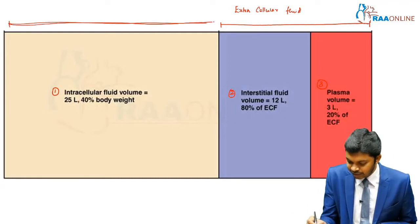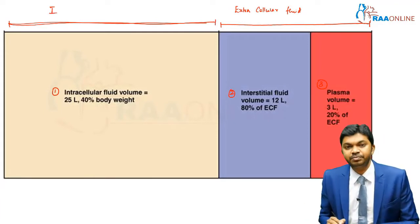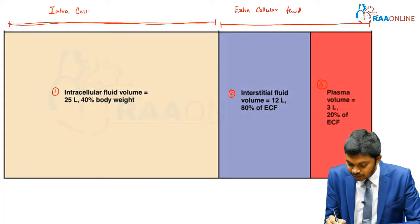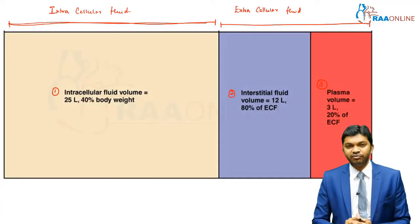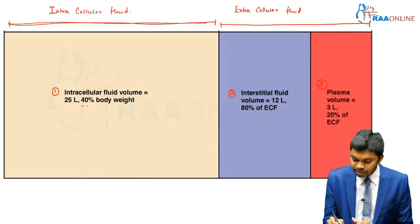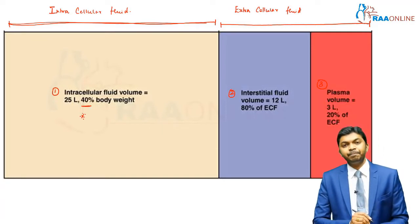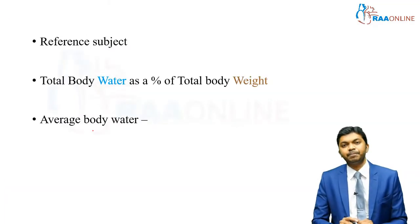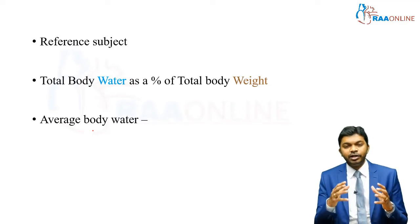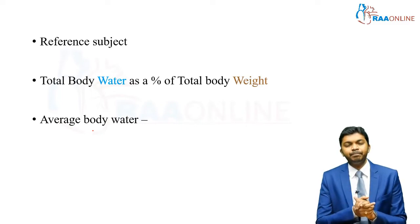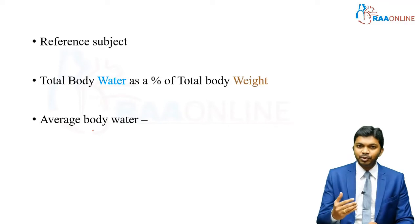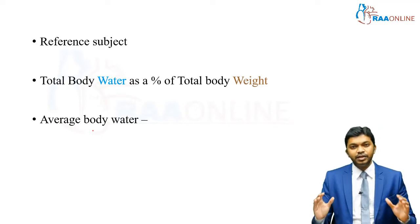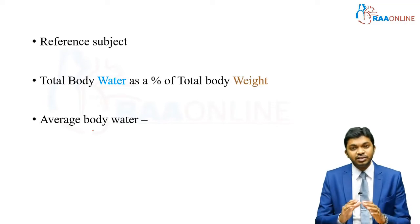So one big compartment is extracellular fluid, and the other is intracellular fluid. Out of these two broad categories of body fluid distribution, much of the water is present in the intracellular compartment, and proportionately less water is present in the extracellular compartment. In order to evaluate the range of water distribution in the body, we take a reference subject and study how water is distributed in that one particular subject. The value obtained from such a subject is called an average value.